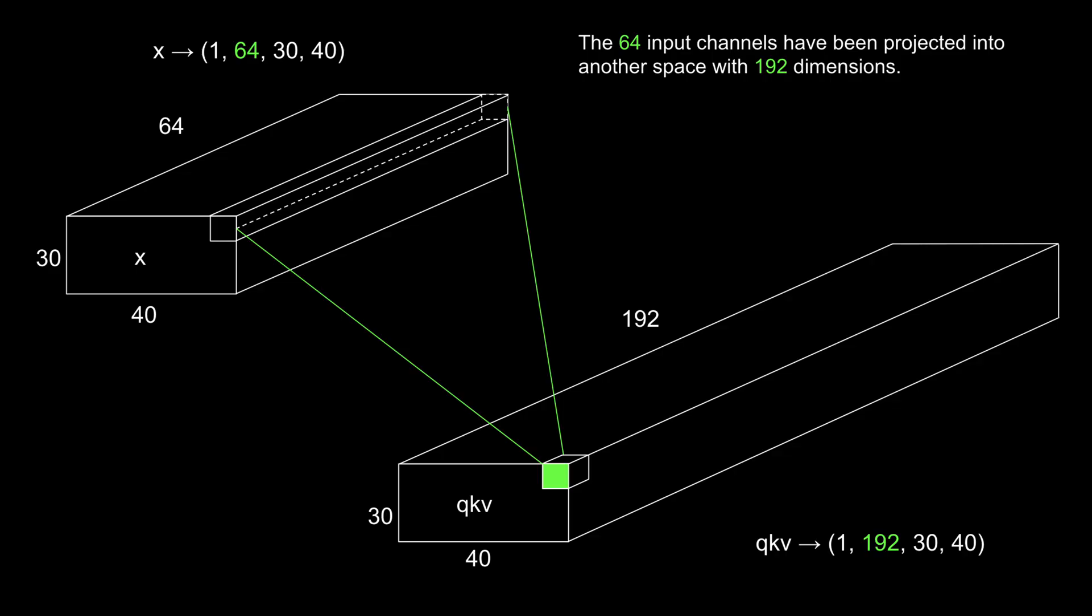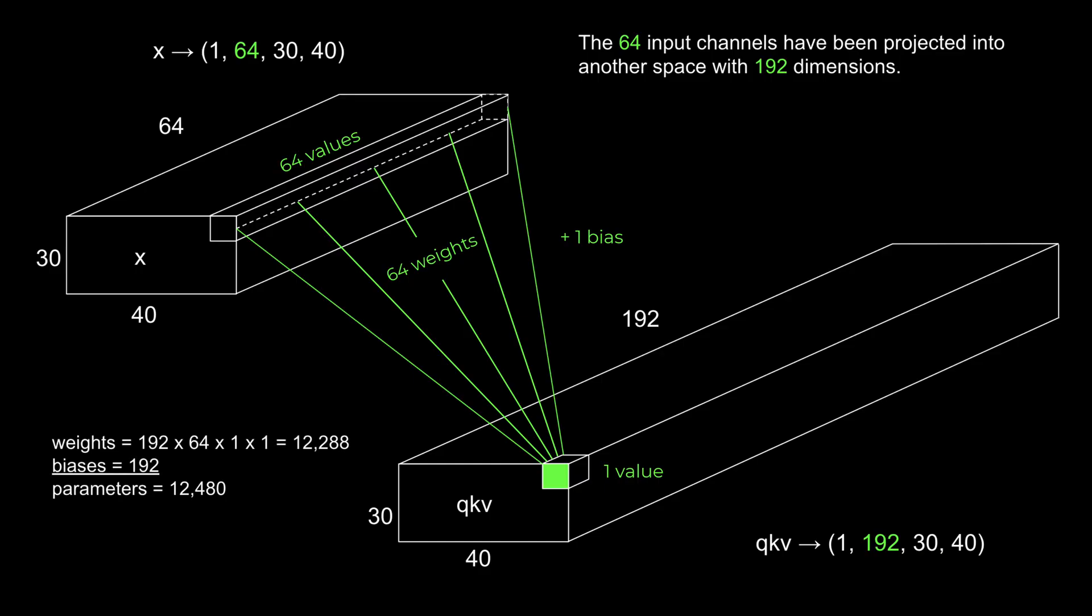And by the way, for those interested in the details, each single output value is the result of multiplying the 64 input features at that spatial position by 64 learned weights corresponding to that output channel, and then adding a bias term. Since we have 192 output channels, and each channel has 64 weights plus one bias, this convolution layer contains 192 by 64, giving us 12,288 weights, as well as 192 biases, one per output channel. Each channel has its own unique set of weights and a bias, which are applied uniformly across all 30 by 40 spatial positions.